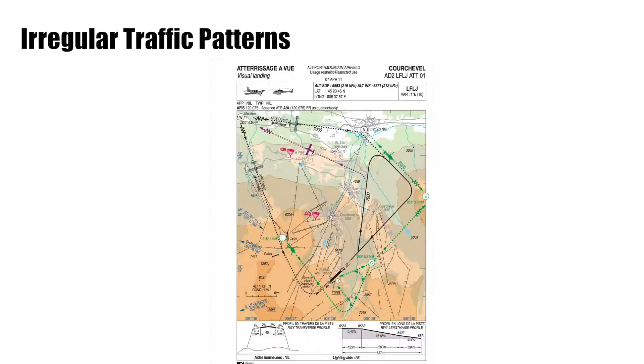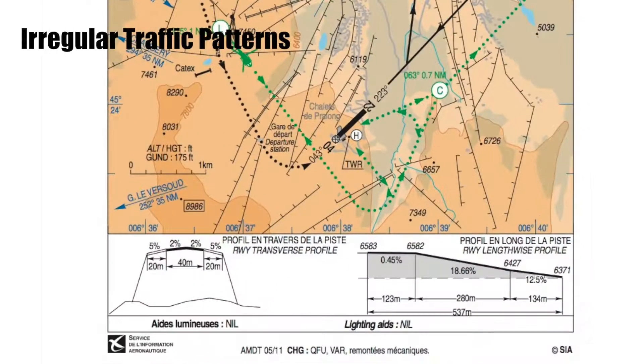Now, not all airfields can have a traditional traffic pattern. One example is Courchevel in the French Alps. Because of the terrain around it, you can't actually have four legs because you can only land in one direction.